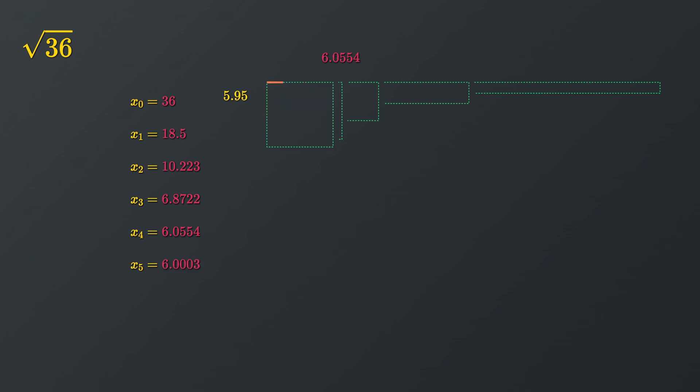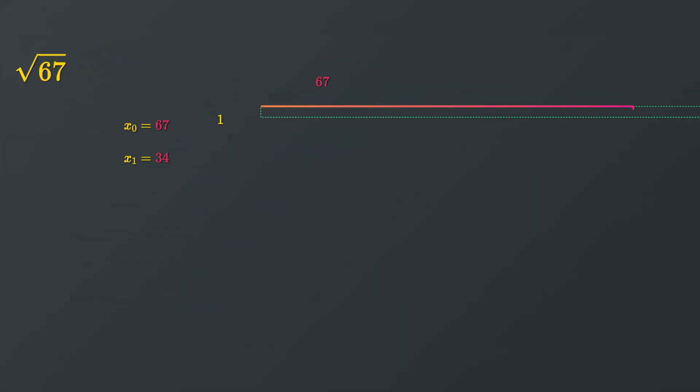In our playground example, we examined a real square number. The method, however, works on any number. It only must be positive. On negative numbers, the algorithm does not converge and jumps back and forth.